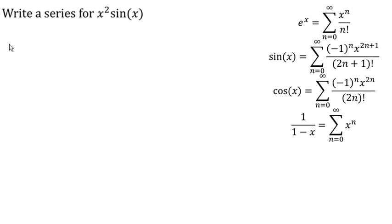So we know that sine x can be written as the sum from n equals 0 to infinity of negative 1 to the n, x to the 2n plus 1 over 2n plus 1 factorial.